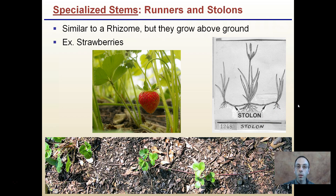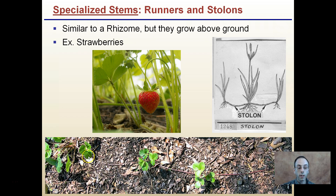Another form of specialized stems are runners and stolons. They're similar to rhizomes, but they grow above ground. If you've ever been strawberry picking and looked at one plant very closely, you'll notice they look like they're connected almost with a wire. These stolons are above-ground stems that link these plants together.